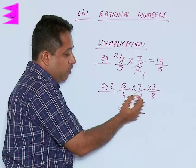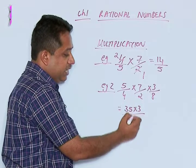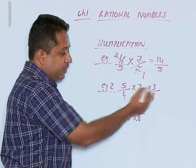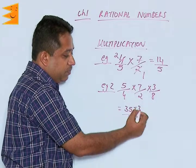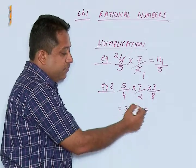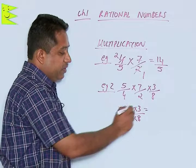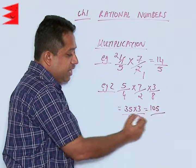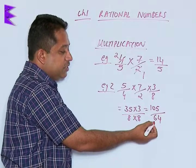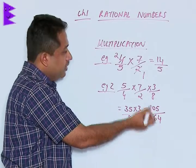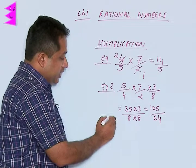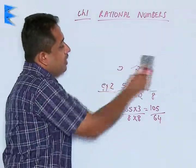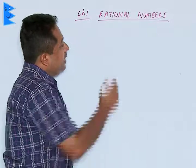For the denominator, we have 4 into 2 is 8, and 8 multiplied by 8. We multiply the first two, then multiply the result by the third number. 35 multiplied by 3 gives us 105, and 8 into 8 is 64. So we get 105 by 64. Similarly, we can check division.